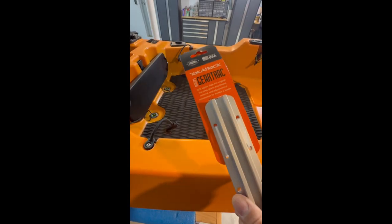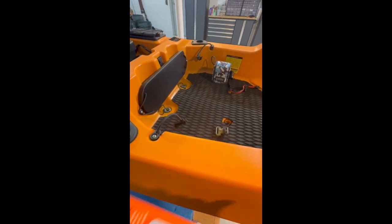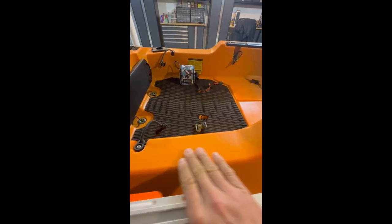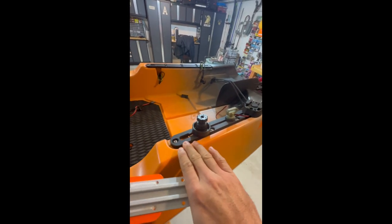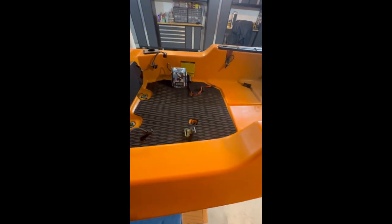Alrighty folks, we're going to be installing some gear track on my Old Town Autopilot 120. As you can see, there is a flat surface here, so there's some gear tracks back here, but I want to put one on this side and that side.